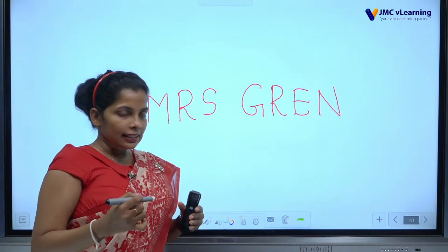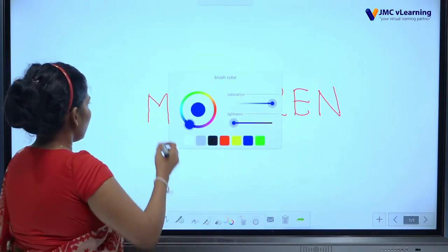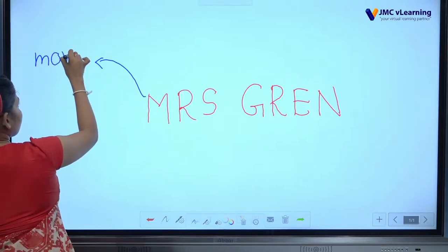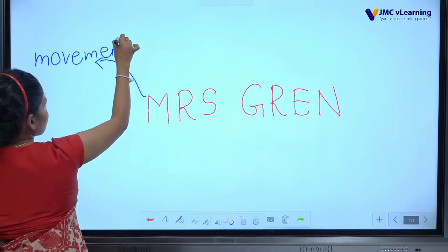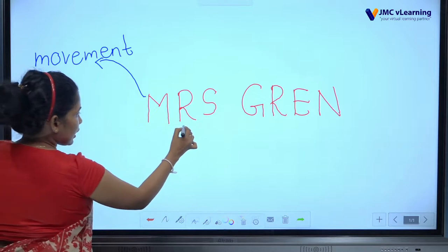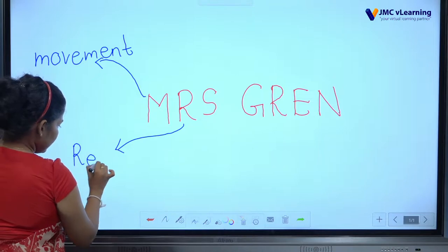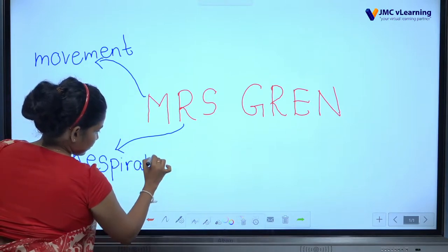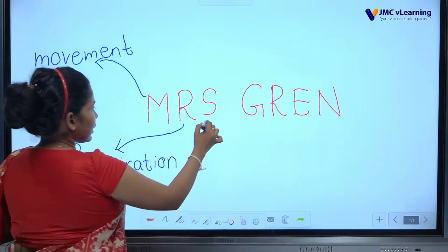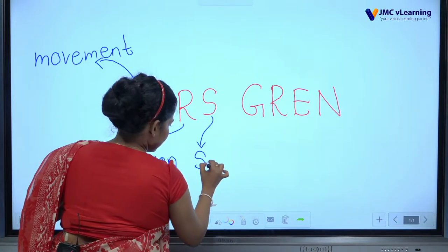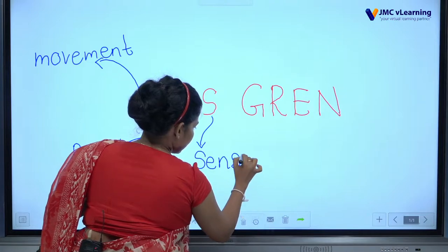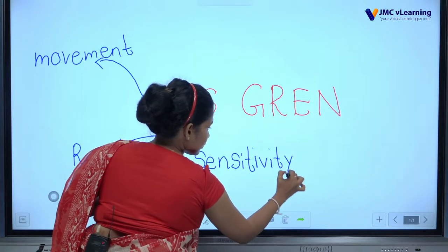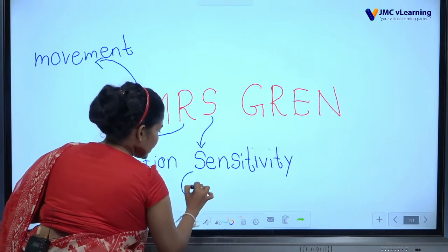There are eight characteristics. The first one — M represents Movement. R means Respiration. S means Sensitivity.